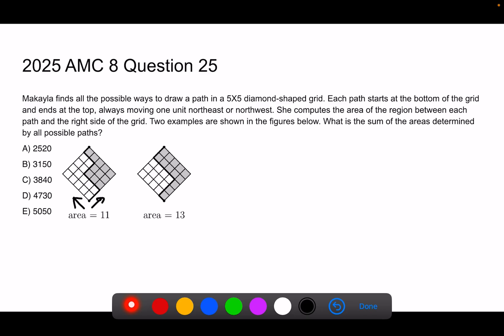So here's a path, and in the right side of the path, there are 1, 2, 3, 4, 5, 6, 7, 8, 9, 10, 11. So the area for this graph is 11.